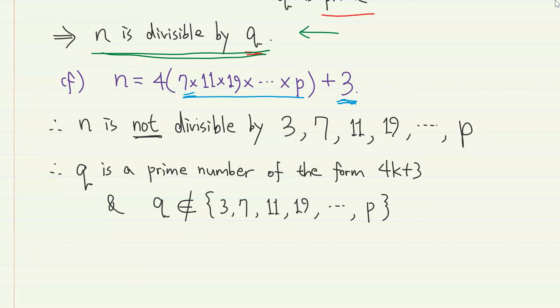This means that our newly introduced prime factor q is a prime number of the form 4k plus 3, which is not one of 3, 7, 11, 19, and so on, and p. This is also a contradiction.